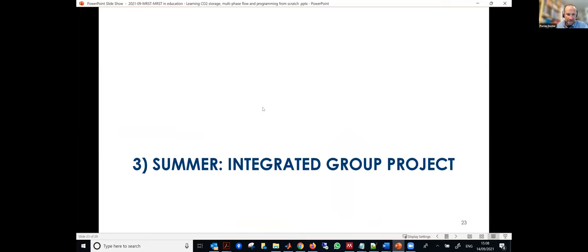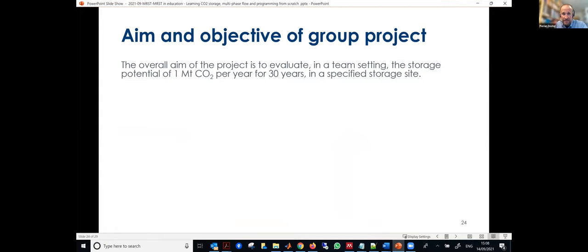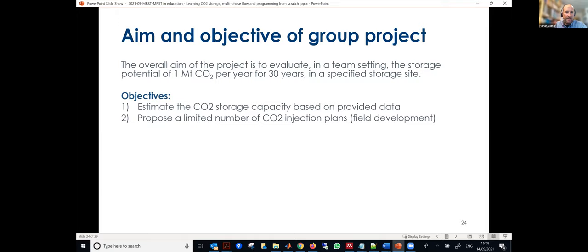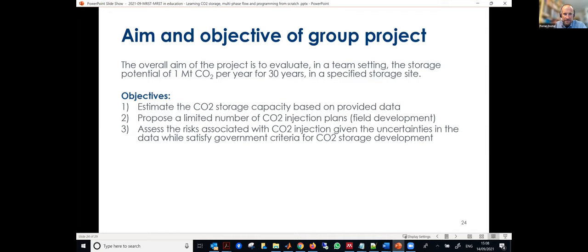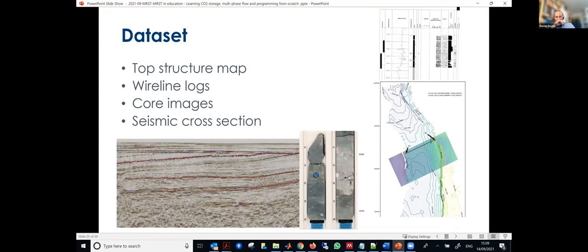Last, I see I have four minutes left, quickly going through the group project which is the core of the program where we bring all the elements together. The overall aim is to evaluate in a team setting the storage potential of one megaton of CO2 per year for 30 years in a specific storage site. The objective is that they estimate the CO2 storage capacity based on provided data with a limited number of CO2 injection plans, assess the risk associated with CO2 injection given the uncertainties in the data, design a site monitoring plan including corrective measures, and incorporate environmental health and safety considerations.